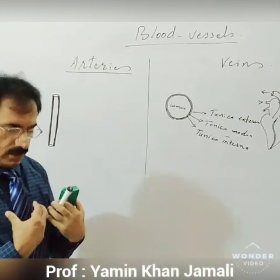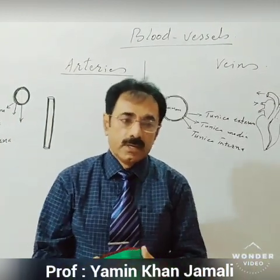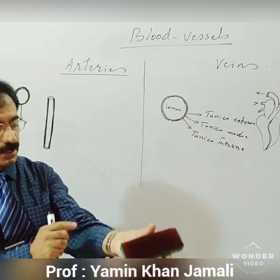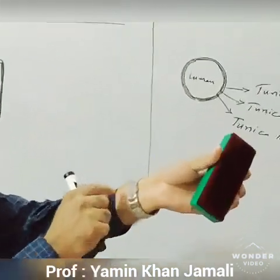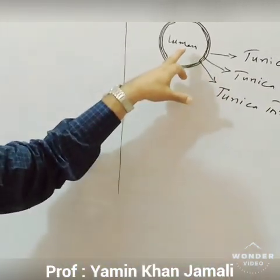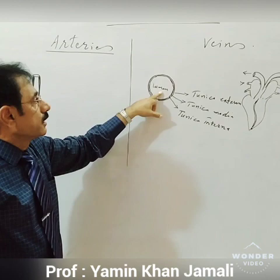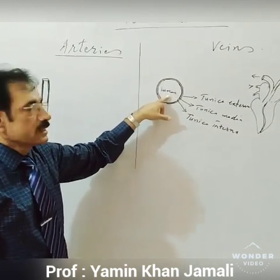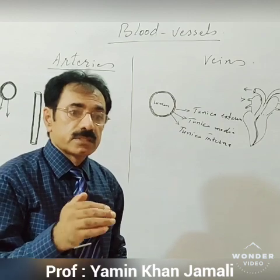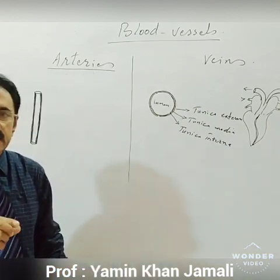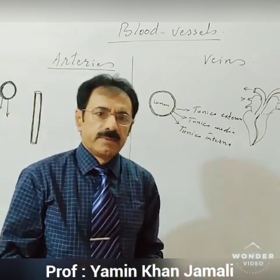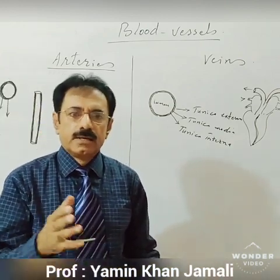Arteries are blood vessels which carry oxygenated blood generally from the heart to all body parts. Arteries are found deep in muscles. Veins are found on the surface of the skin, and as a result the blood temperature in veins is sometimes lower compared to arteries. The blood pressure within the arteries is measured with an instrument called a sphygmomanometer.